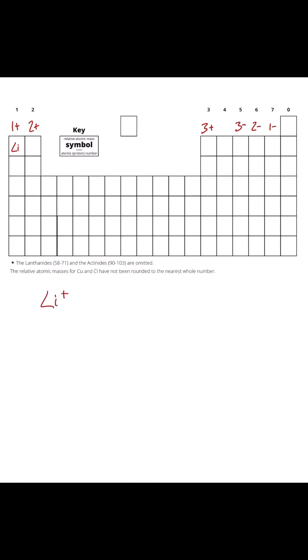Aluminium is here, so that would be a charge of three plus. Let's try a negative one. If we had fluorine which is up here, that would be F one minus, but you don't write the one so you just call that F minus.